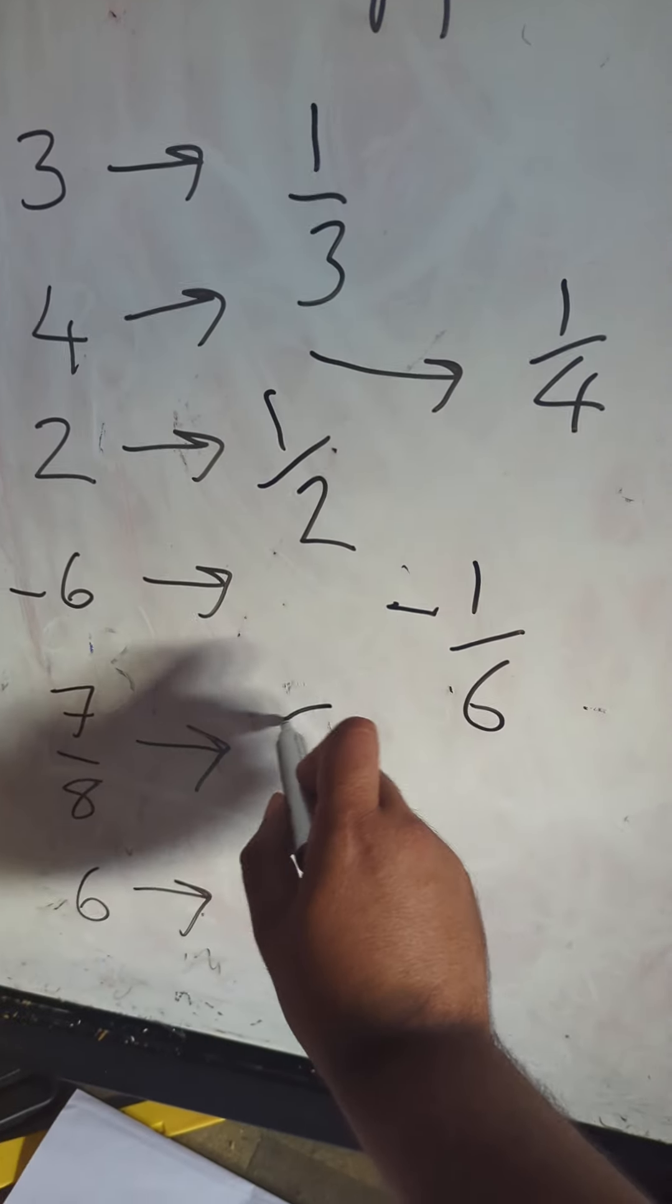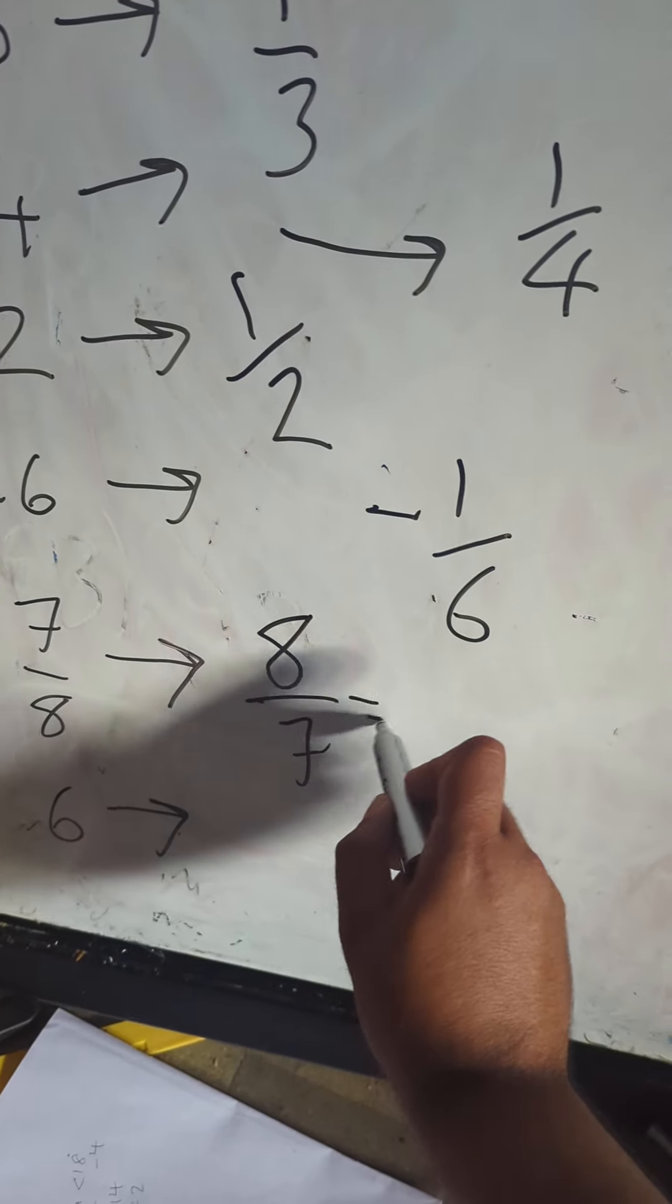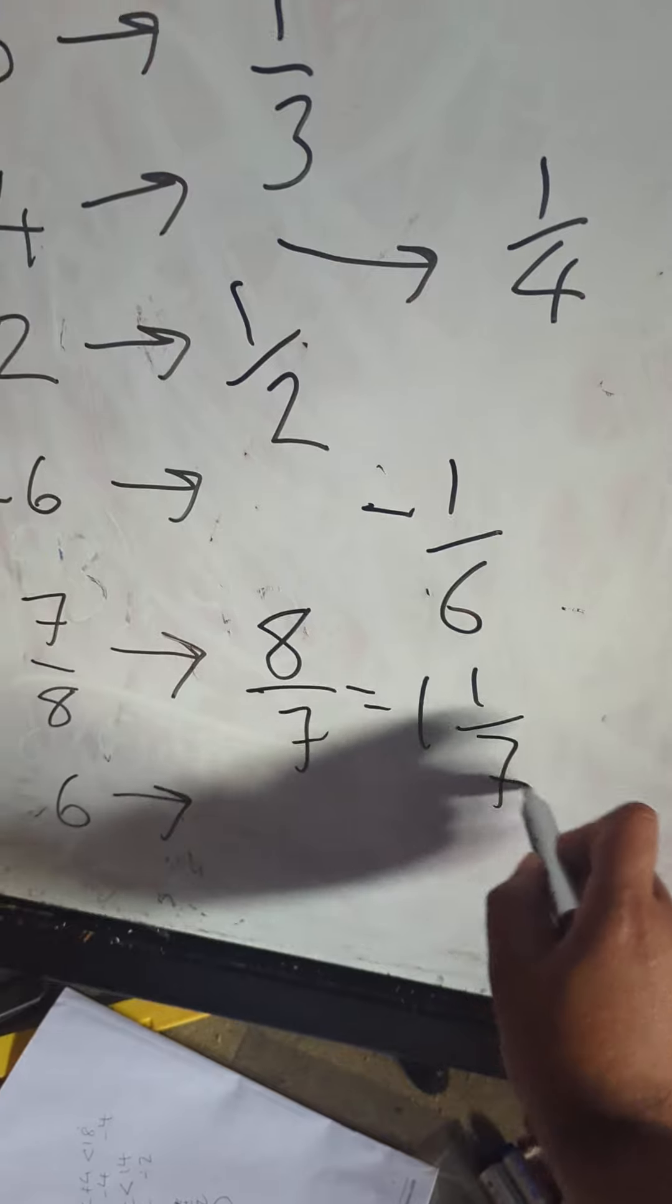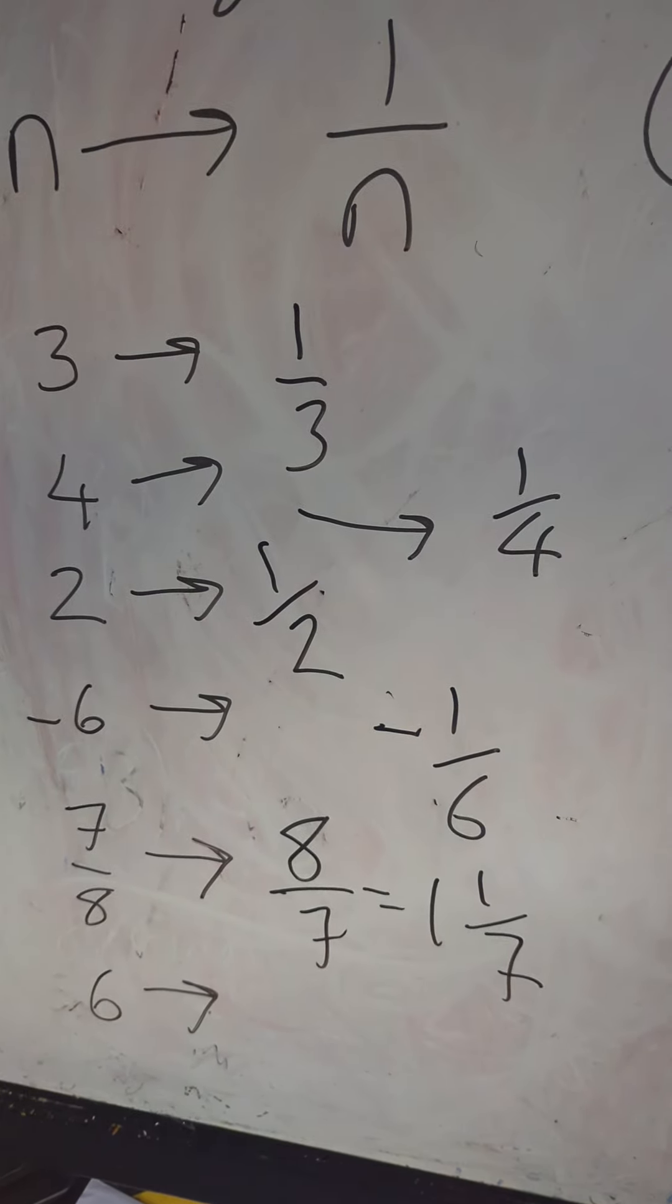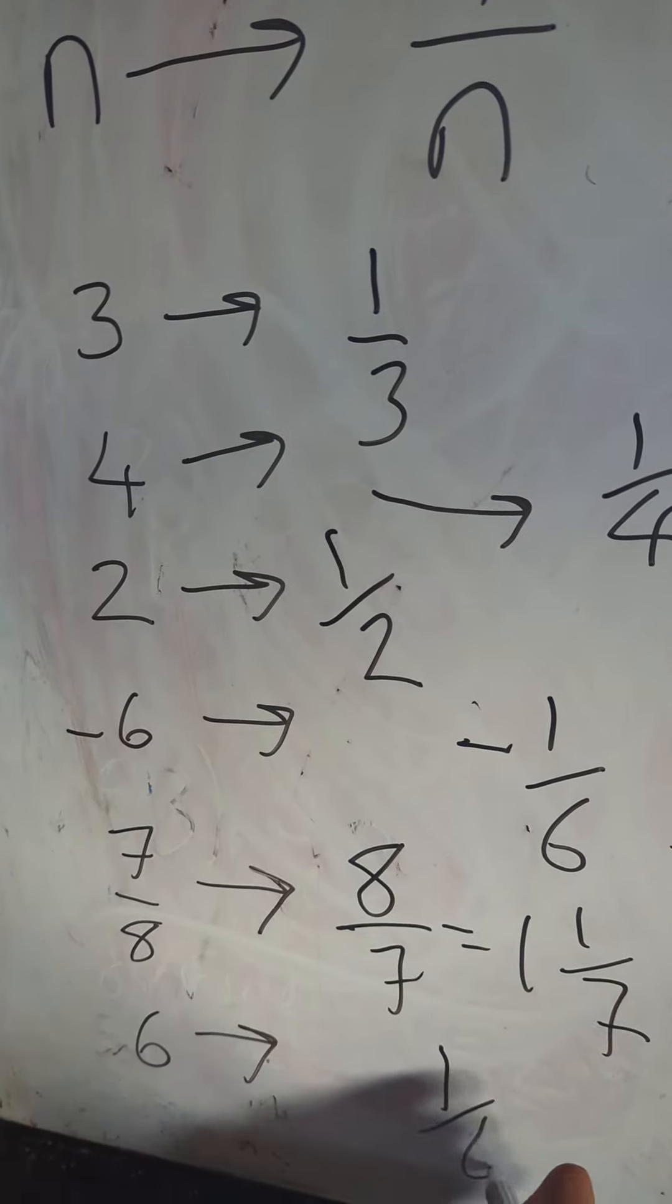The reciprocal of 7/8 is a bit trickier. I just flip the fraction so it goes to 8/7, which is equal to 1 and 1/7 as a mixed number.